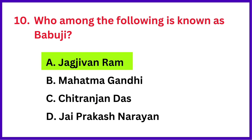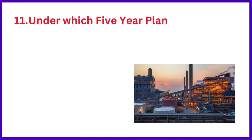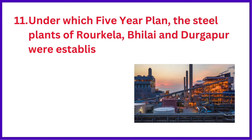The correct answer is option A: Jagjivan Ram. Under which five-year plan were the steel plants of Rourkela, Bhilai, and Durgapur established?